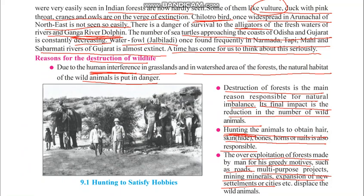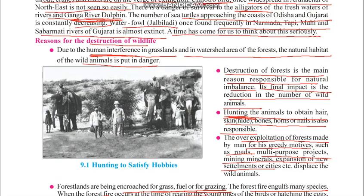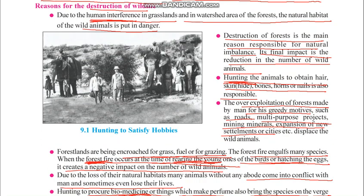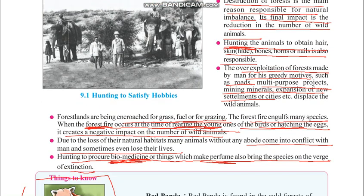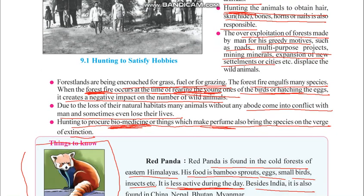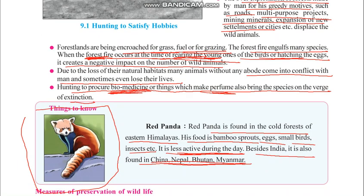To summarize, the main reasons for the destruction of wildlife are: human interference in grasslands, destruction of forests, hunting of animals, over-exploitation of forests, encroachment of forest land for grazing, conflict with human beings, and hunting for biomedicine and perfume. Behind all of this, man is the main responsible person.